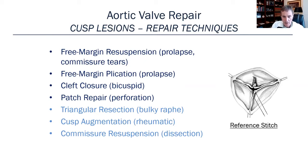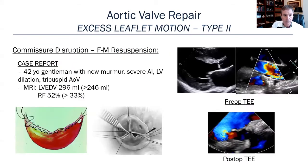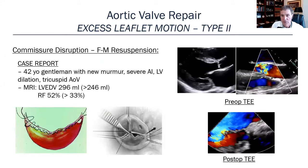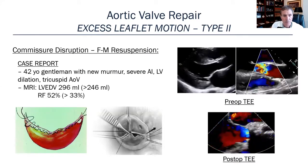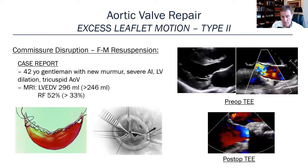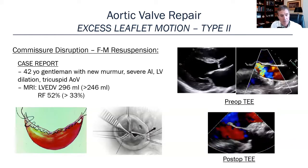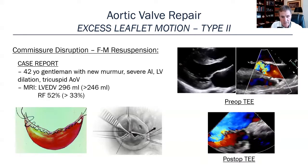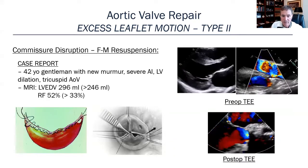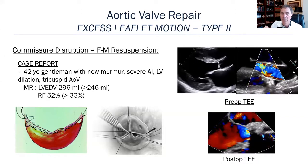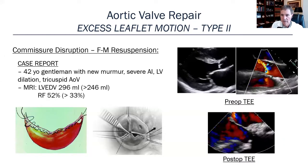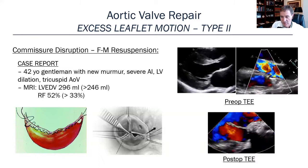Here's a common case of commissural disruption — a 42-year-old gentleman with a new murmur who met all criteria on MRI. What we did was take a very fine Gore-Tex suture, do a double layer on that one leaflet, and we were able to pull it up to the right height and repair that gentleman's aortic regurgitation.